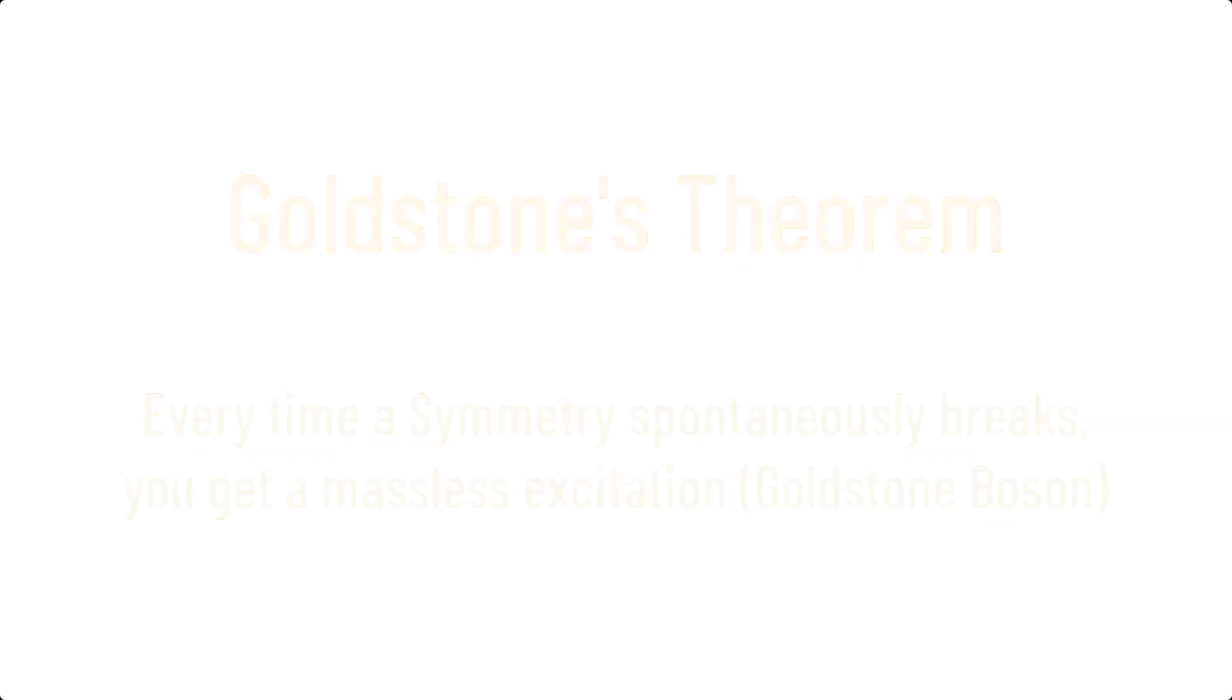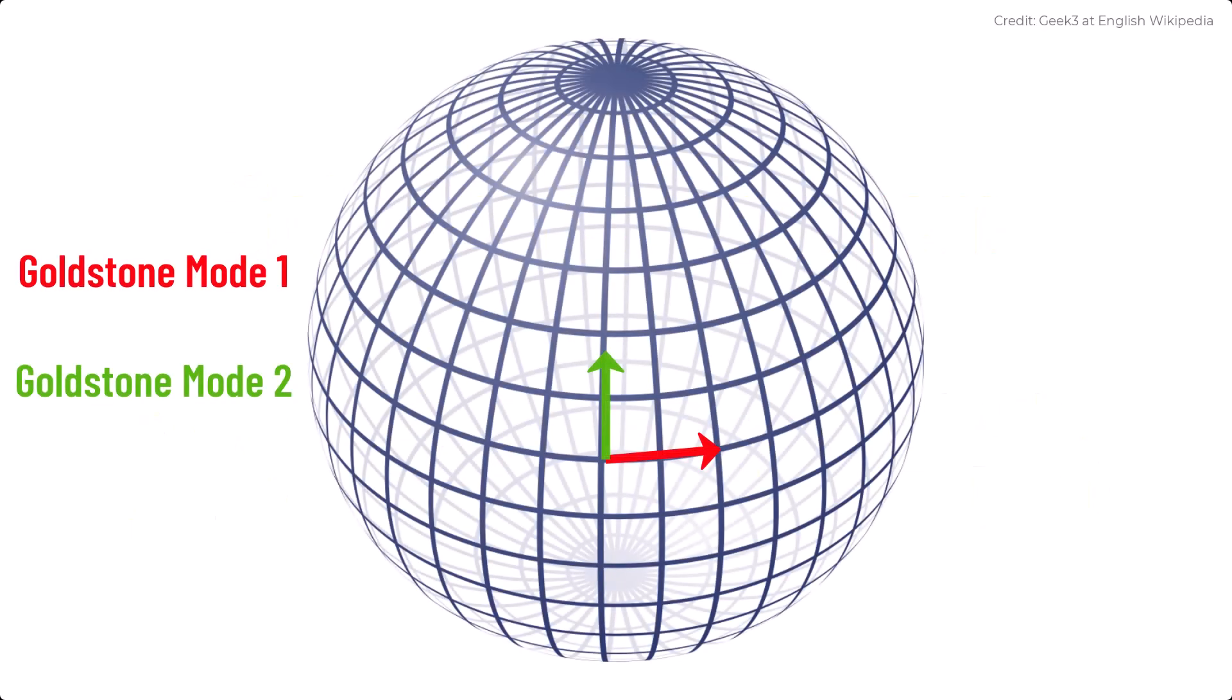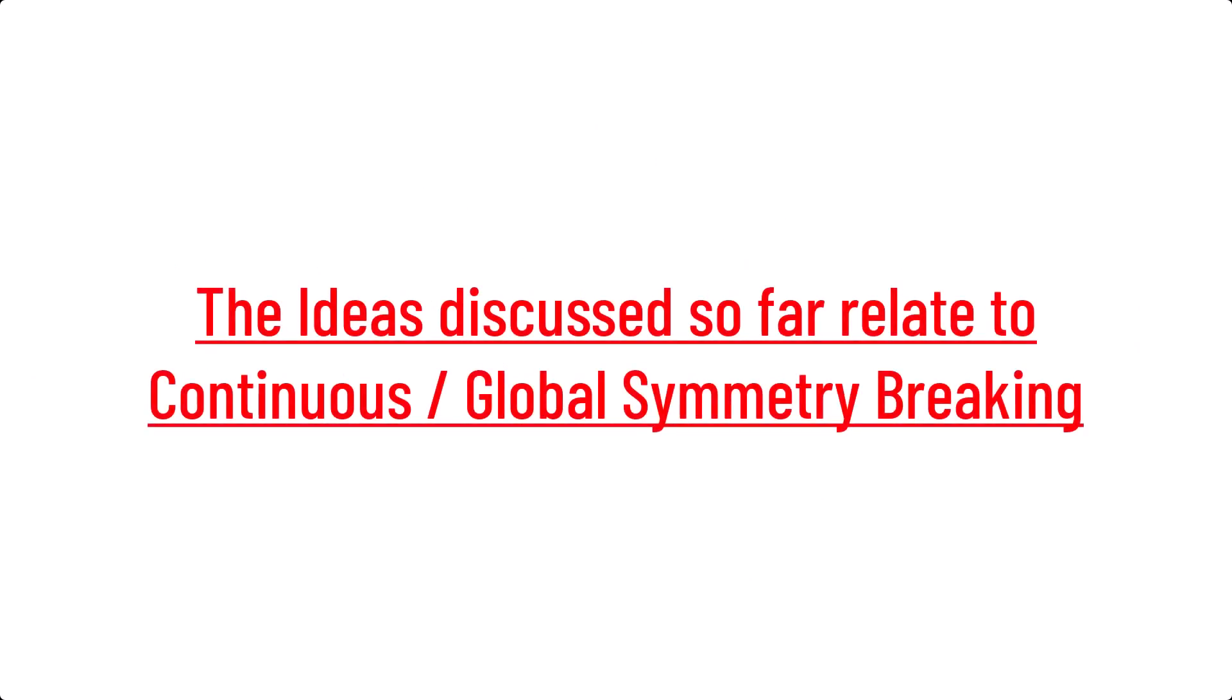However, we had three order parameters and three fields, yet only two goldstone modes. This means that one symmetry of the system is unbroken. There's still one line along which rotations on the graph look symmetrical. In 2D, this would be up through the center of the Mexican hat.